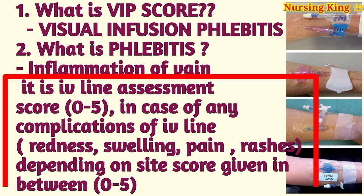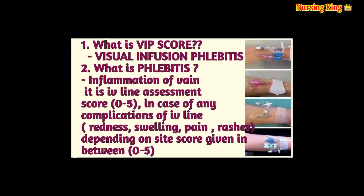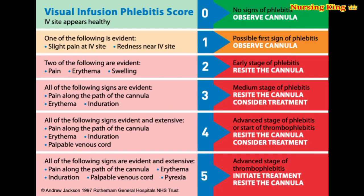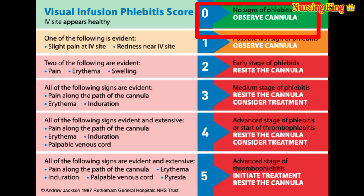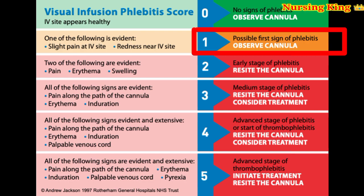Complications include redness, swelling, pain, and rashes. Depending on the site and findings, you give a score from 0 to 5. Score 0 means the IV line has no phlebitis — no complications. The IV line is good and patent.